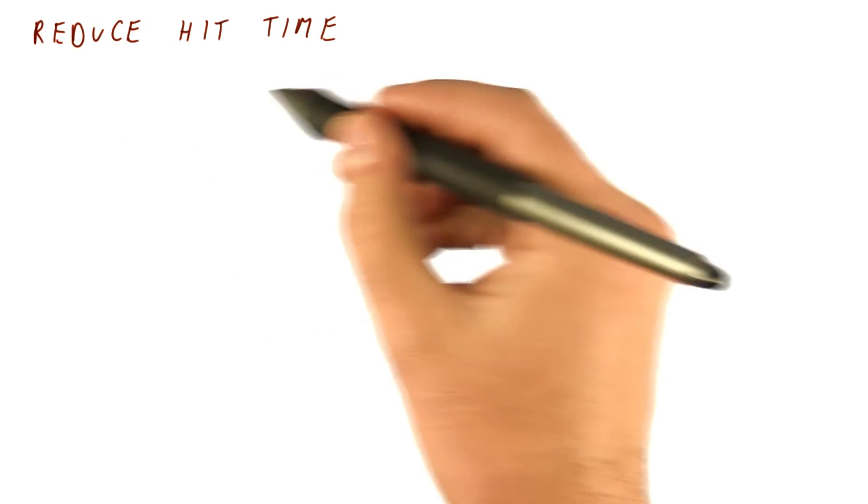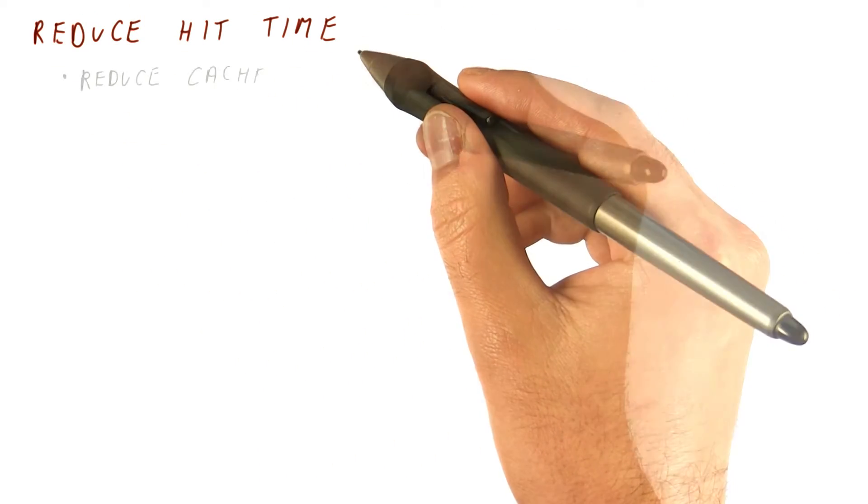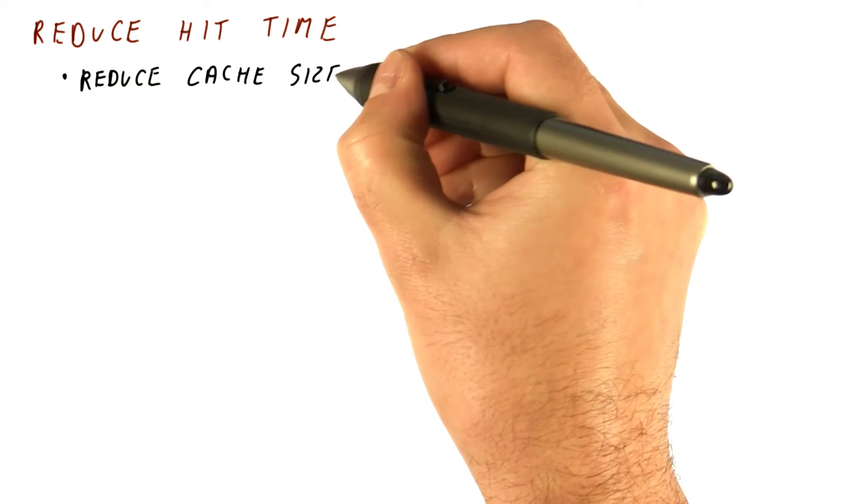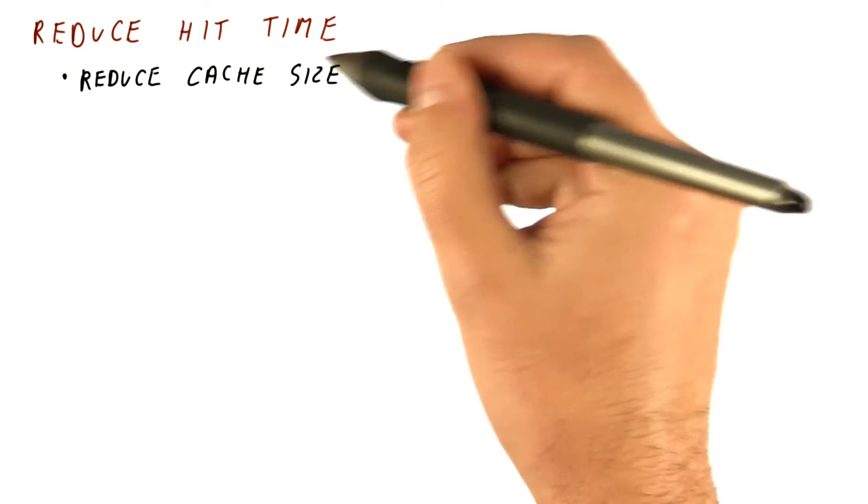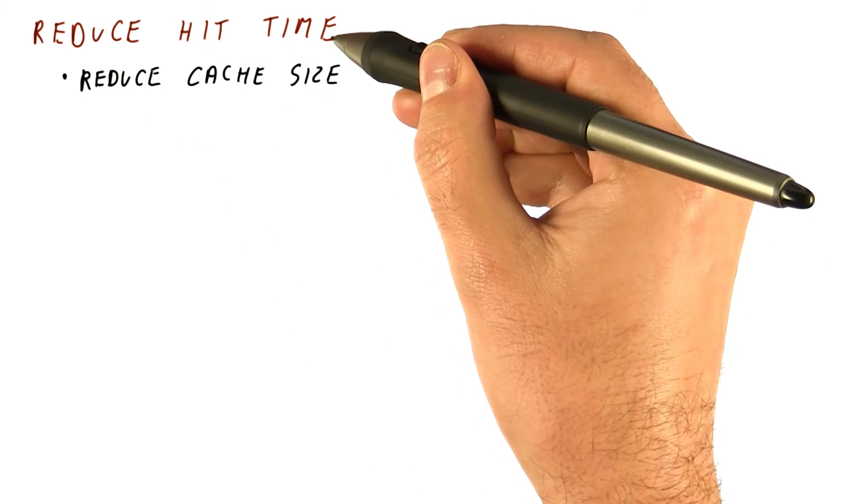Let's first look at the methods that try to reduce hit time. Some of the methods are pretty obvious, like reducing the cache size. That's going to improve the hit time.